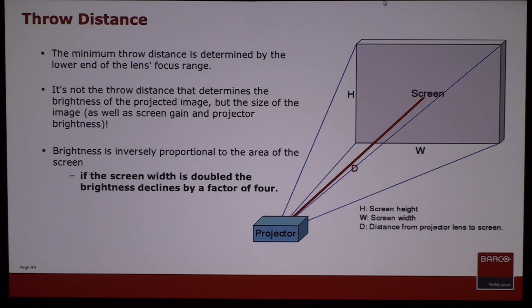If you have a 10,000 lumen projector on a ten foot screen, and you make that screen bigger, you go to a 20 foot wide screen, you're going to be taking the same amount of light and spreading it out over a much larger surface area. So the image will appear to be much less bright.